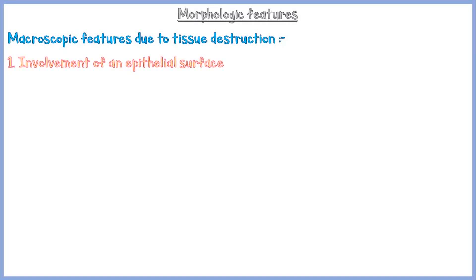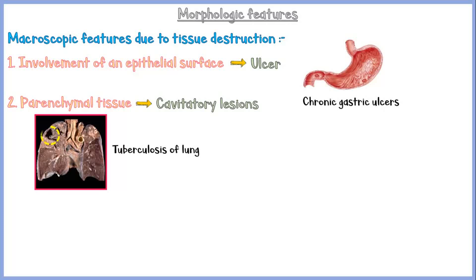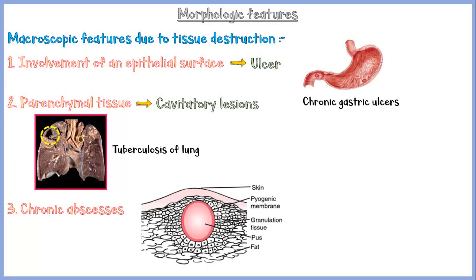Tissue destruction and fibrosis during chronic inflammation give rise to certain morphological features that can be seen both macroscopically and microscopically. Involvement of an epithelial surface may result in formation of an ulcer, such as chronic gastric ulcers. In parenchymal tissue, chronic inflammation gives rise to cavitatory lesions. For example, in secondary pulmonary tuberculosis, there is formation of cavities due to extensive tissue destruction. These cavities get filled with inflammatory exudate, and when coughing, this exudate may come out as sputum. Another feature is formation of chronic abscesses — a pus-filled cavity surrounded by a pyogenic membrane, with areas of granulation tissue around the abscess.